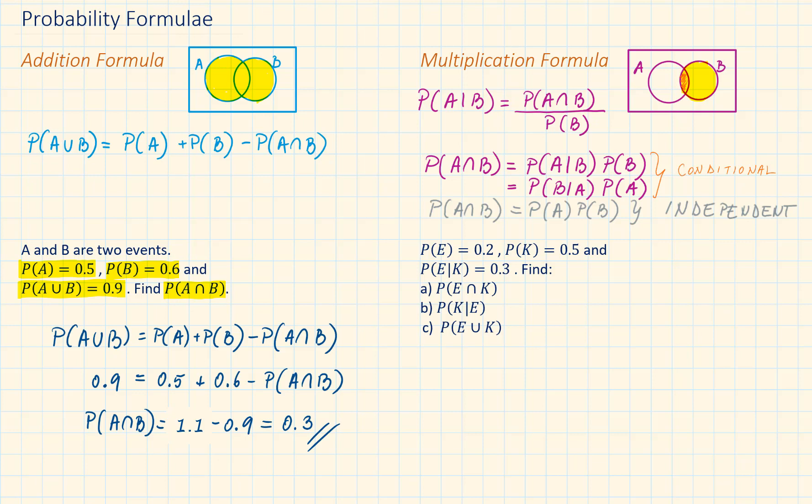Let's see how we can apply the multiplication formula by looking at another example. E and K are two events such that probability of E is equal to 0.2, probability of K is 0.5, and probability of E given K is 0.3. Part A: Work out their intersection.